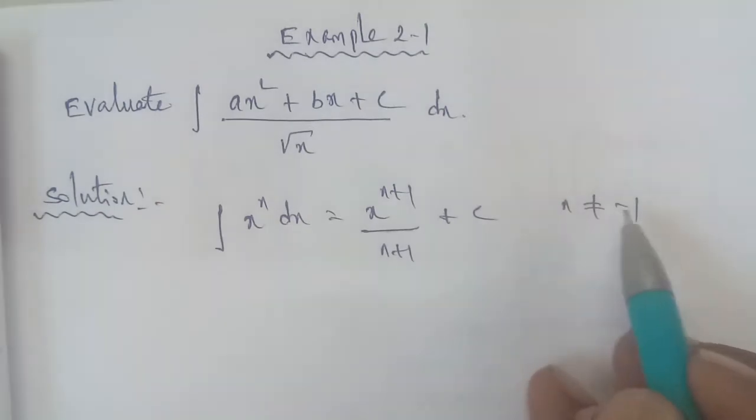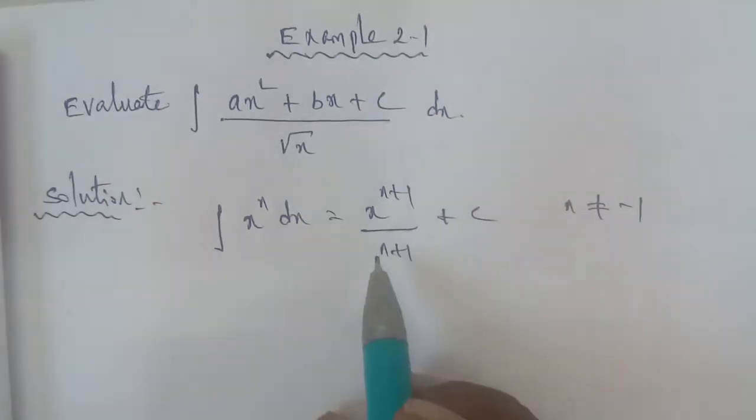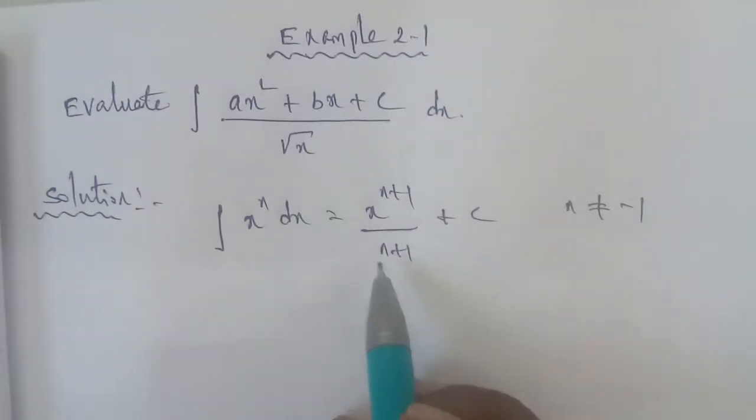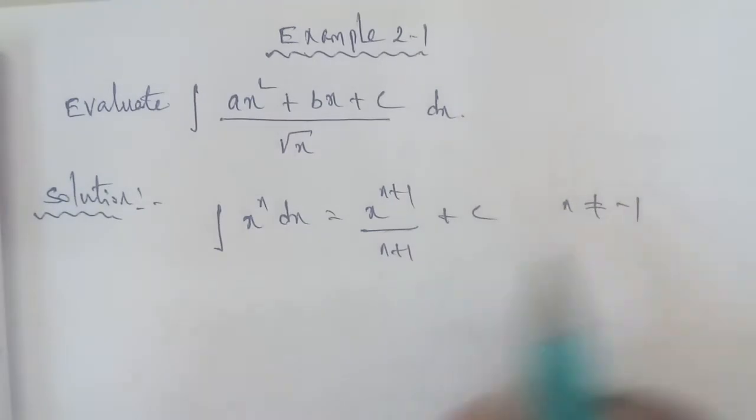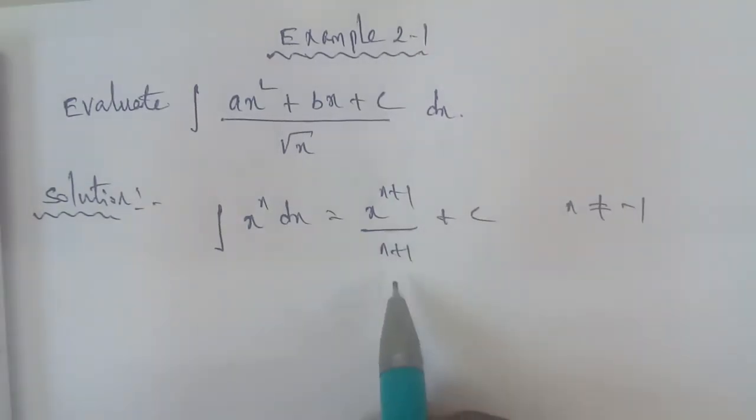The condition is n not equal to minus 1, because if n equals minus 1, the denominator value becomes 0, which is undefined. That is why n is not equal to minus 1.